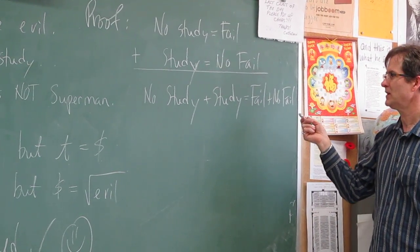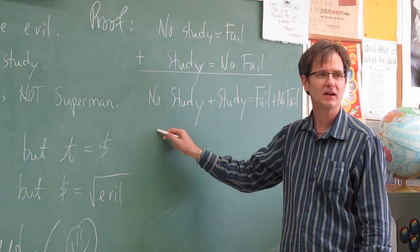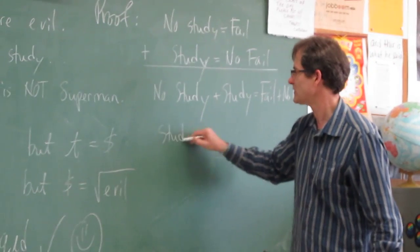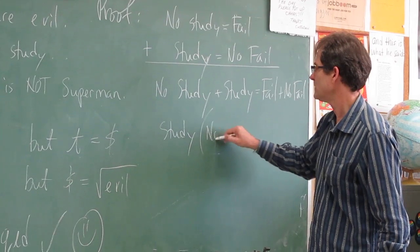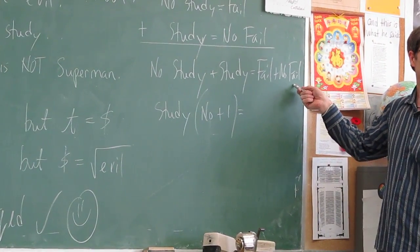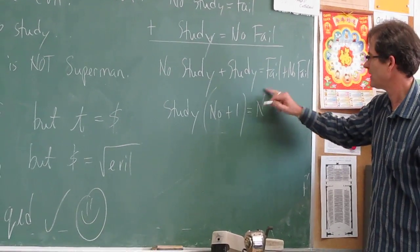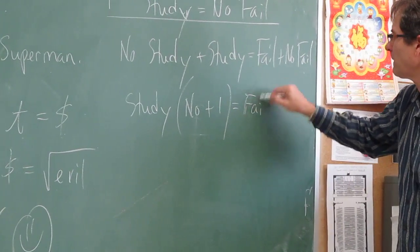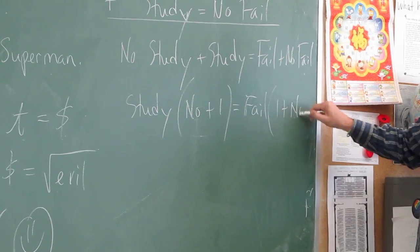Now I can factor something out of each side. What can I factor on the left-hand side? Study. So if I factor out study, I get no plus one. And I can factor out of this side fail. If I factor out fail, I also get, in this case, one plus no.